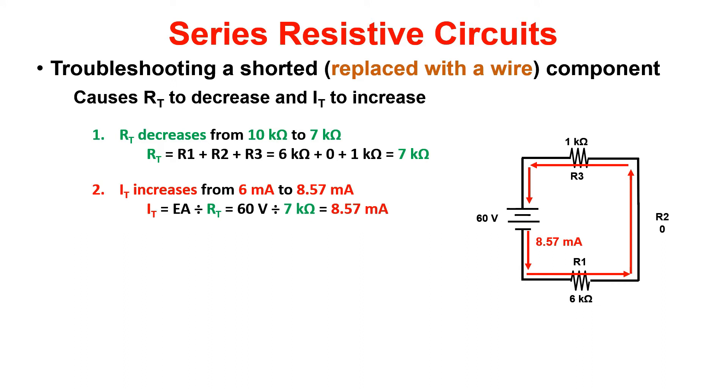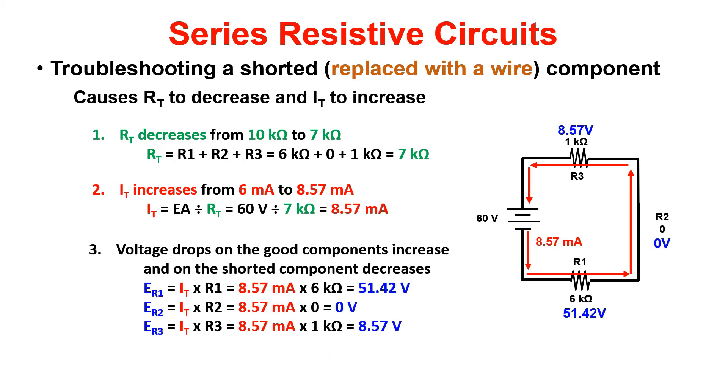Now, we take the current and multiply it by each individual resistance in the circuit. 8.57 milliamps times 6k gives us 51.42 volts. 8.57 milliamps times zero resistance gives us zero volts. And 8.57 milliamps times 1k gives us 8.57 volts.